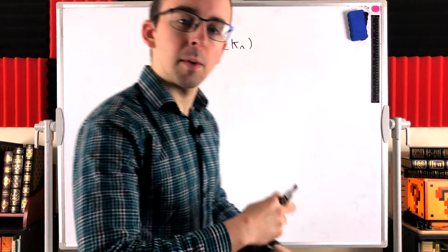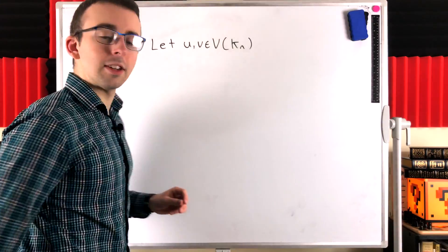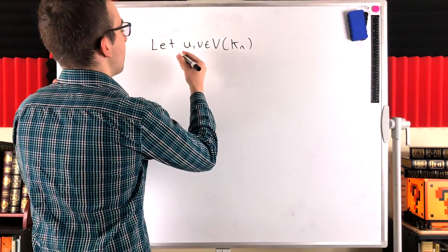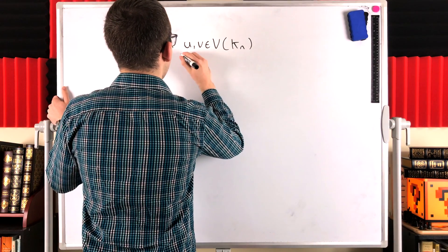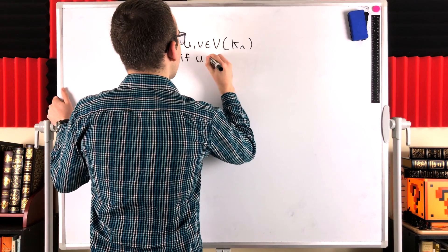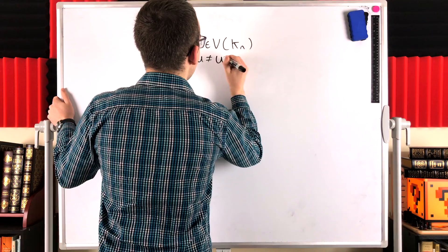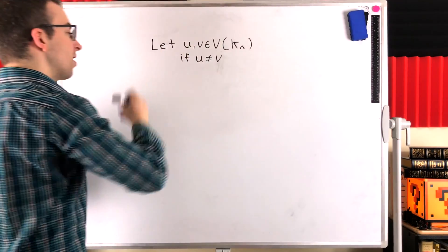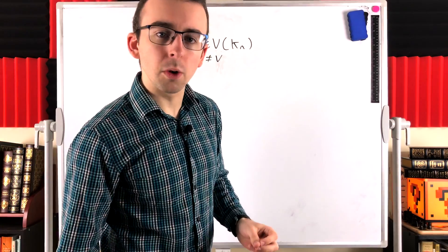Now, of course, we're interested in how many colors we'll need to color the different vertices of the graph. So let's take a look at what happens if u and v are different vertices. If u is not equal to v, so u and v are distinct vertices. If u is not equal to v, what do we know about u and v?